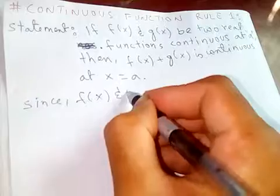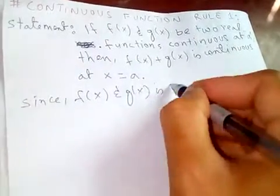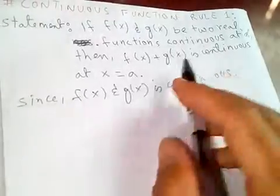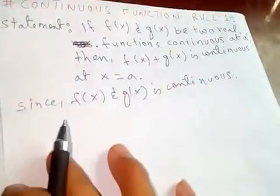Since f of x and g of x is continuous, you are given that f of x and g of x is continuous already.